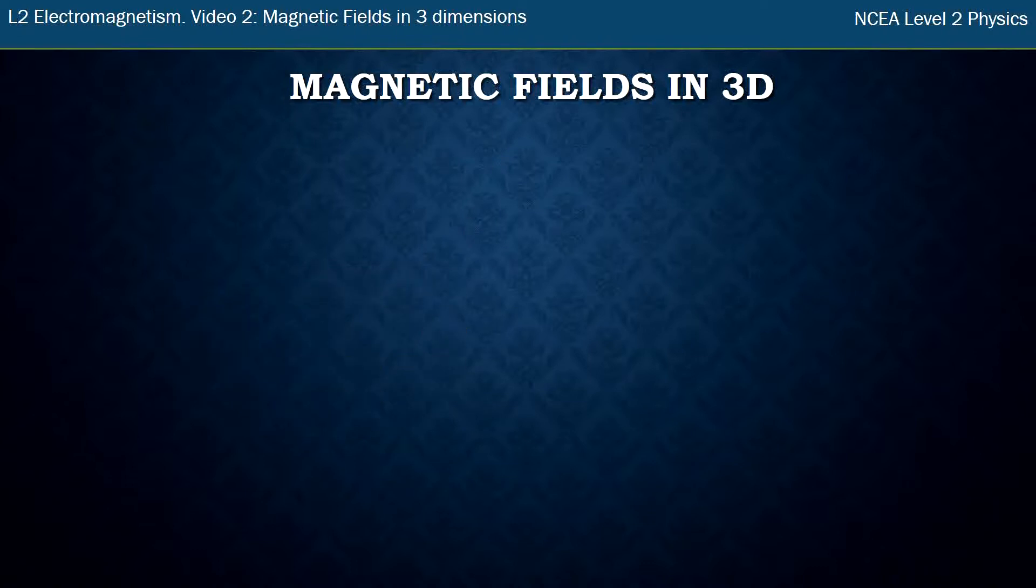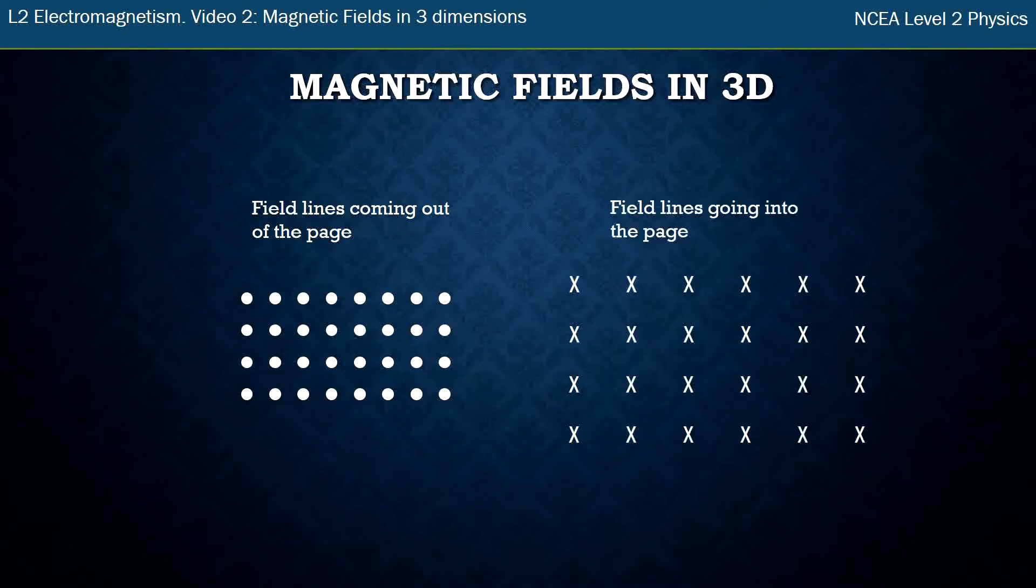So effectively we have the third dimension: we have up, down, left, and right. And the third dimension is into the page and out of the page. So field lines coming out of the page towards your eyes are the dots of the arrow, and the field lines moving away from your eyes, going into the page, are the crosses. So this is how we draw our fields in three dimensions.